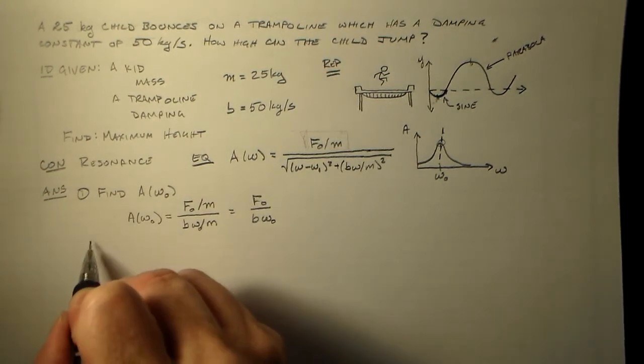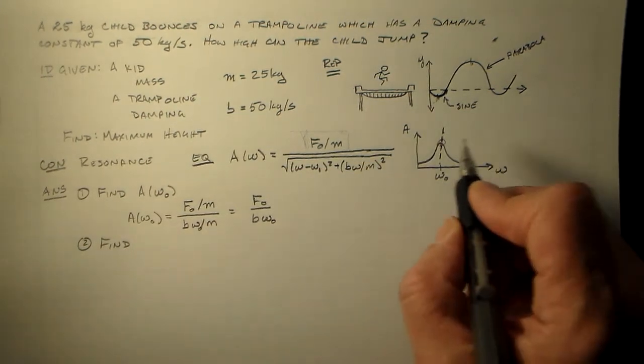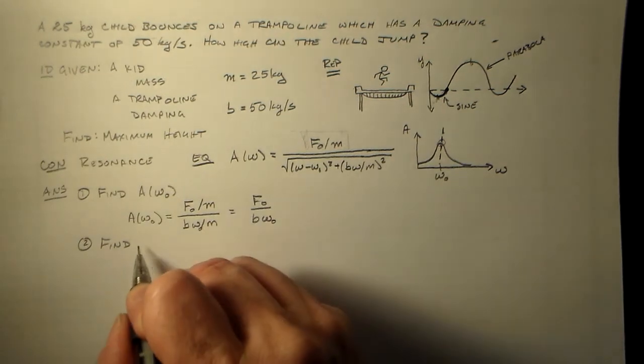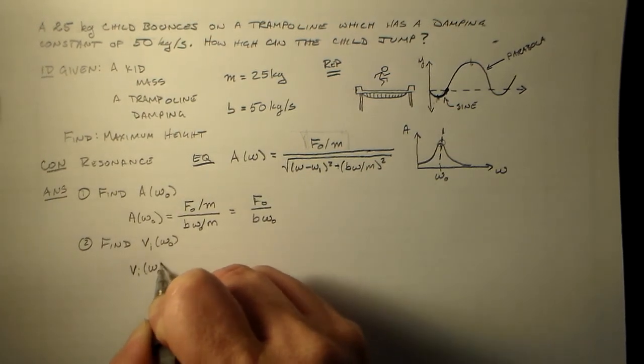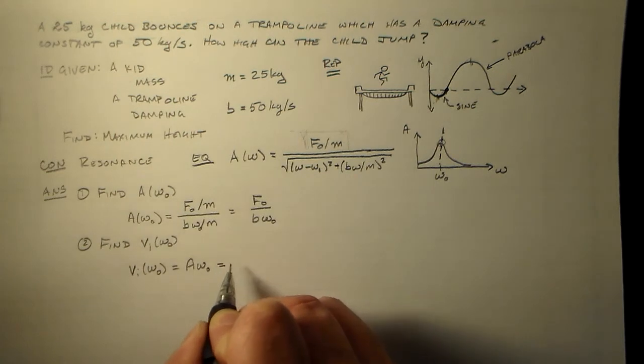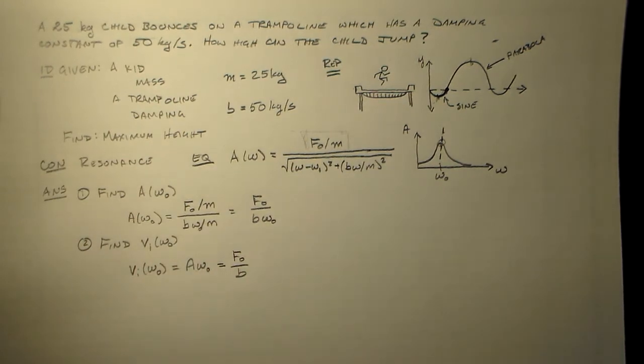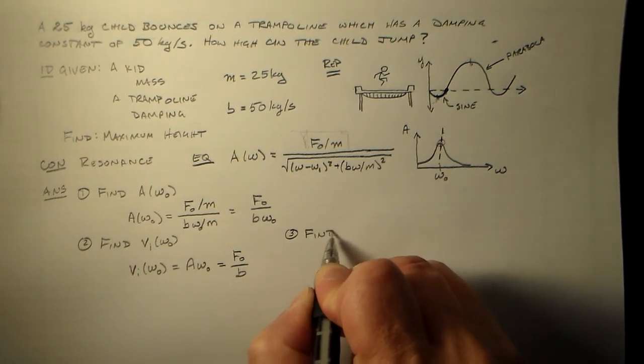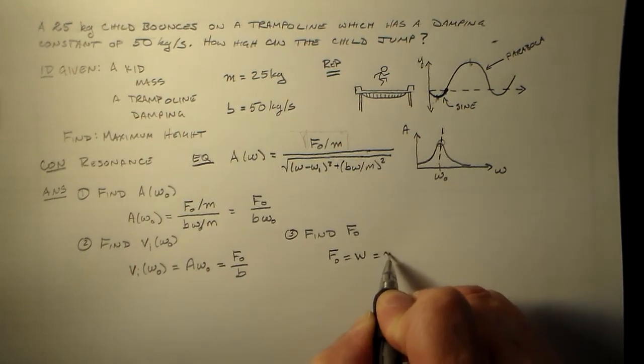So if we know that amplitude, we can find the velocity right here. We can use that velocity to figure out how high the kid jumps. That seems good to me. So let's find the initial at omega naught. That's going to be equal to A omega naught. As you'll recall, which means that this is equal to F0 over B. This omega, and this omega cancel. So that still looks like it's going pretty good. We should also want to know what f0 is. And like I said, I'm just going to use the weight of the kid, which is just mg.